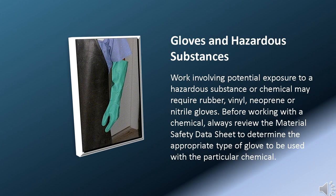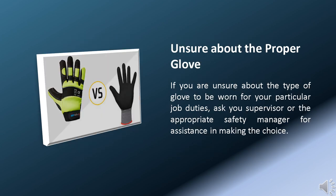Work involving potential exposure to a hazardous substance or chemical may require rubber, vinyl, neoprene, or nitrile gloves. Before working with a chemical, always review the material safety data sheet to determine the appropriate type of glove to be used with the particular chemical. Replace gloves on a regular schedule to avoid chemical breakthrough. Always inspect your gloves prior to use for tears, holes, or other damage. If you are unsure about the type of glove to wear for your particular job duties, ask your supervisor or the appropriate safety manager for assistance. Once you have determined what type of glove to wear, it is important to wear gloves that fit properly. Gloves that are too small can tire your hands and restrict movement, and gloves that are too large can be too cumbersome to work in. Be sure your gloves fit properly.